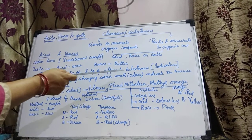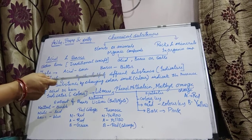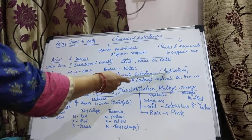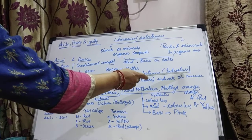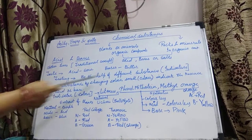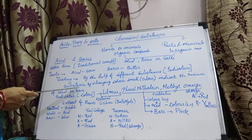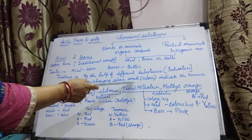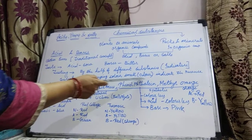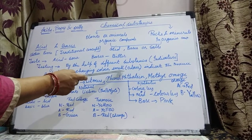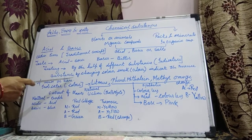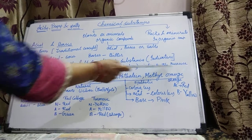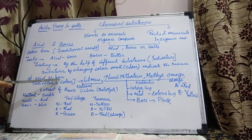The substances which we use to identify acids or bases are called indicators. What are indicators? Indicators are substances which, by changing their color or by changing their smell — we also call it odor — indicate the presence of an acid or a base.